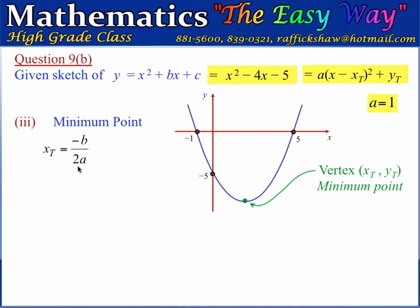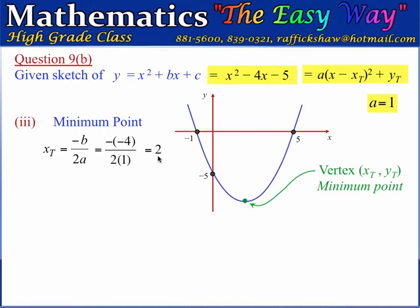xt equals negative b divided by 2a. With b equals negative 4 and a equals 1, xt equals minus negative 4 divided by 2 times 1, which equals 2. The y-value of the turning point, yt, can be calculated using the formula: 4ac minus b squared, divided by 4a. Substituting a equals 1, b equals negative 4, and c equals negative 5.